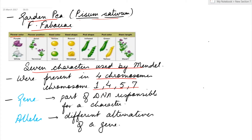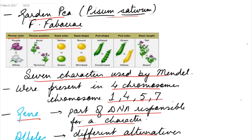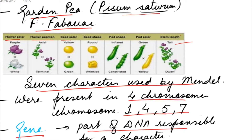Before we go into details, let's study some terms. Gene: a gene is a part of DNA responsible for a character. Alleles are the term used for genes — alleles means different alternatives of a gene. For example, the gene for stem length has two alternatives: tall and dwarf. So tall and dwarf are two alleles of the gene for the height of the plant.